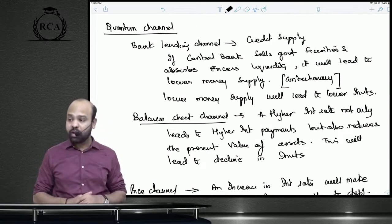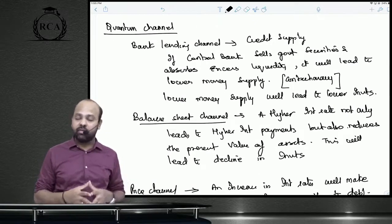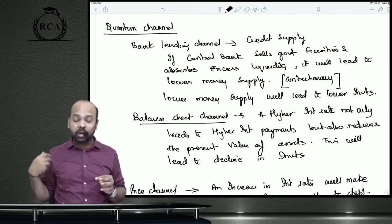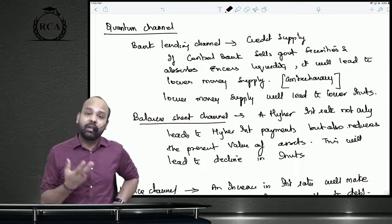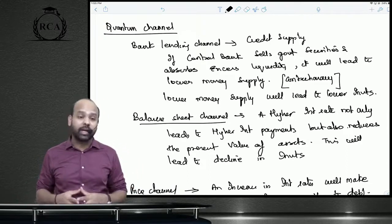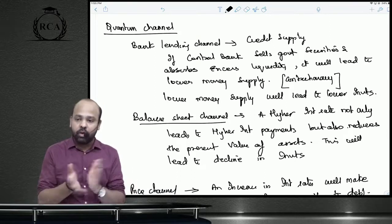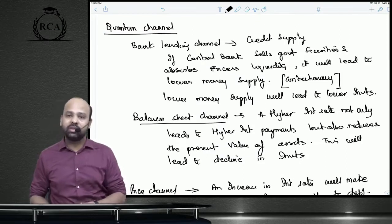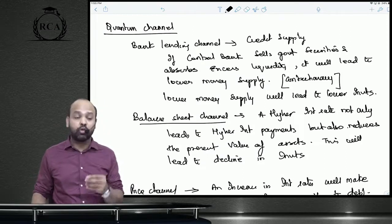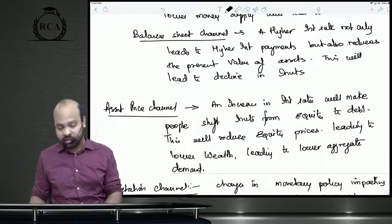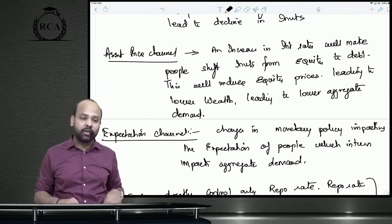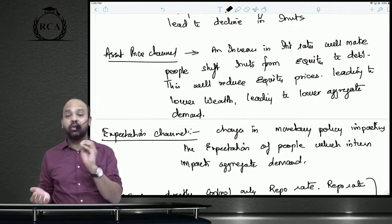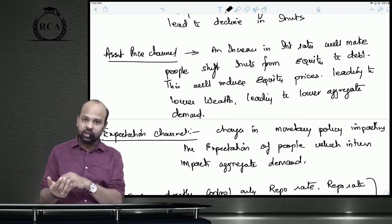The quantum channel includes the bank lending channel and the balance sheet channel. If the central bank sells government securities via open market operations, it absorbs excess liquidity, leaving banks with fewer funds to lend — reducing total lending capacity. Higher interest rates also reduce the value of businesses, negatively impacting investment. Additionally, higher interest rates cause investors to shift from equity to debt instruments, reducing equity demand and household wealth, further reducing overall demand.